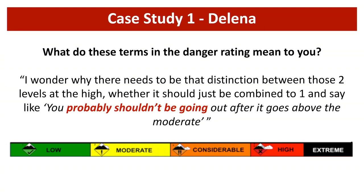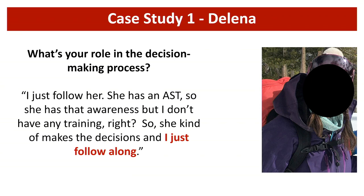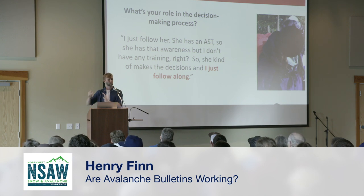I'm going to read this quote because it's so brilliant. She said: 'I wonder why there needs to be that distinction between those two levels of high. Whether it should just be combined into one and say, like, you probably shouldn't be going out after it goes above moderate.' She also spoke about the ambiguity and her confusion over what each of the different terms was telling her to do — she actually said, 'I always think considerable is higher than high.' Delana also spoke of a phenomenon we heard from a number of participants: how they would drastically change their behavior depending on who they were traveling with. She would often go out snowshoeing by herself, but if traveling with a meaningful mentor, she would almost completely defer decision-making responsibility away from herself. She said: 'She has an AST, she has the awareness. I don't have any training. So she makes the decisions and I just follow along.' It's really interesting to see that for one person, you could have almost completely different behavioral routines.